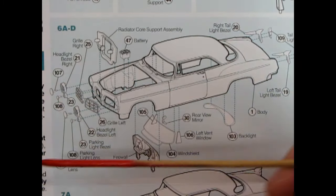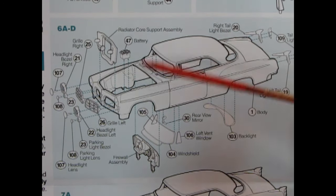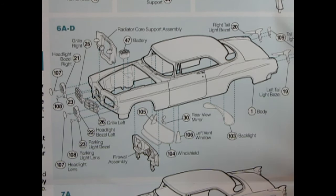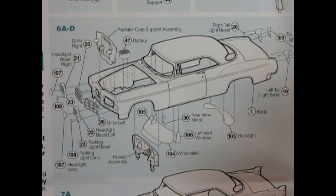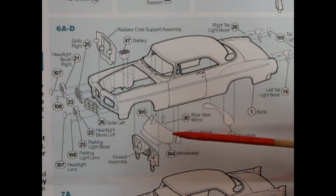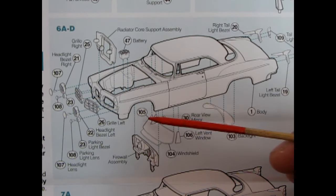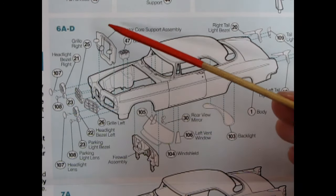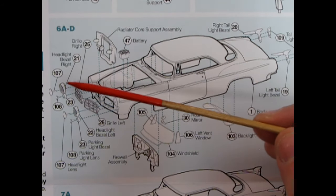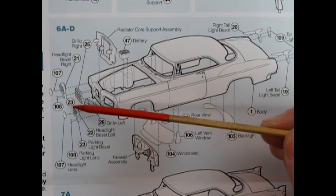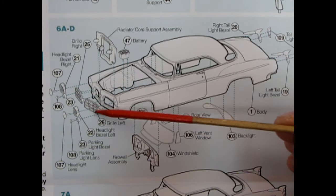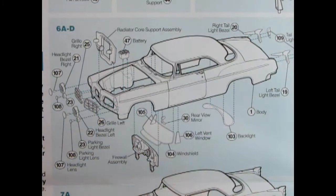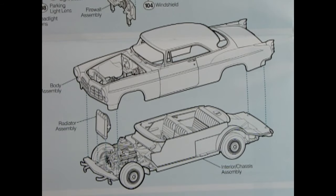Panel 6A to D, we have our body being glued together. Now this is just before it goes onto the frame. So what we have are the taillights and taillight bezels being glued in at the back. We have the backlight or rear window being glued in. The front windscreen as well as left and right hand side vent windows. Rear view mirror. Firewall assembly. Battery. Radiator core assembly. And then we have our headlights. This is of course the bezels and the actual lenses being glued in. And then those wonderful grills into there. So that completes our body build.